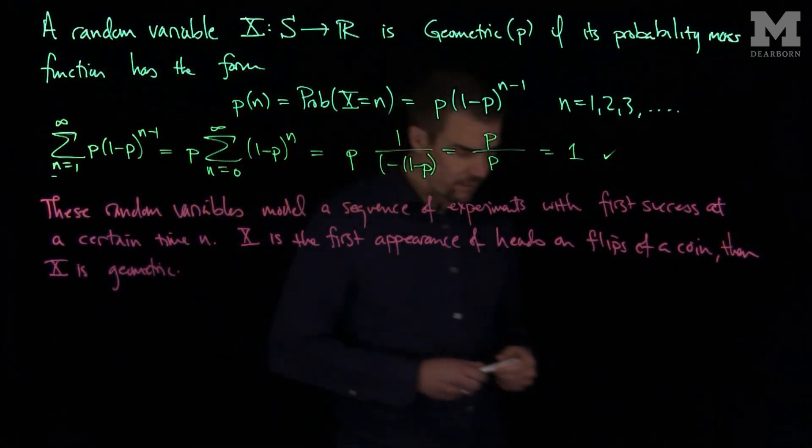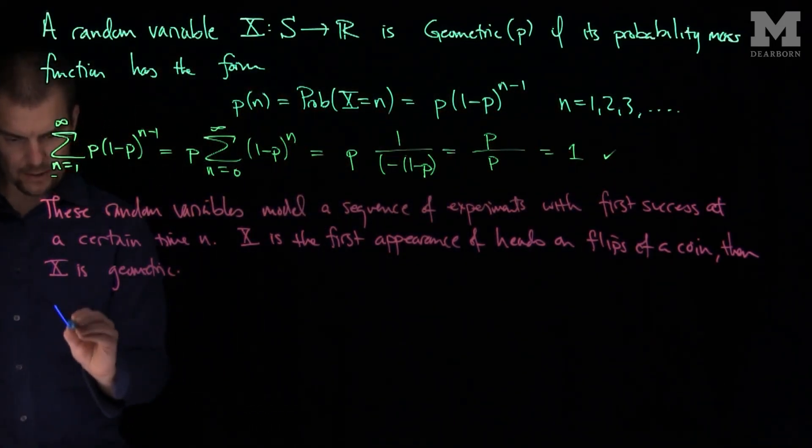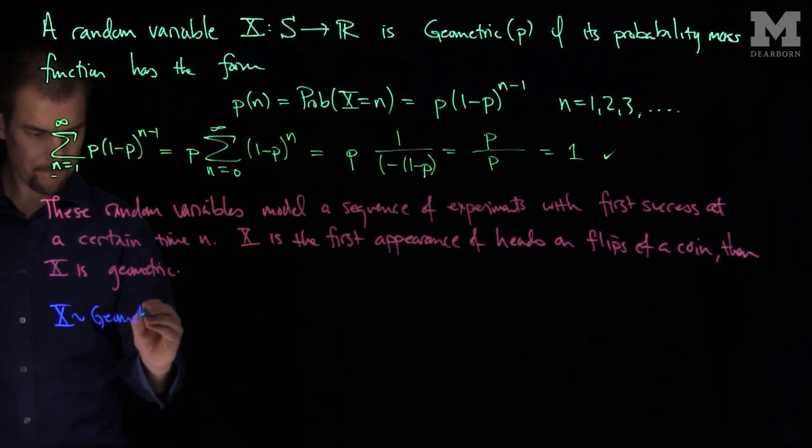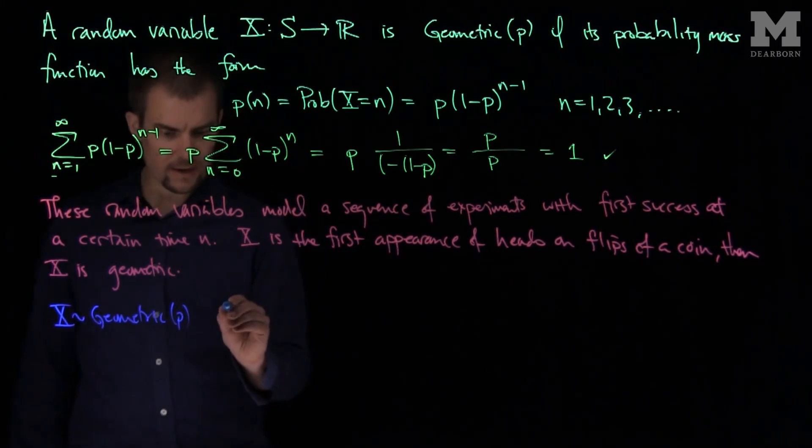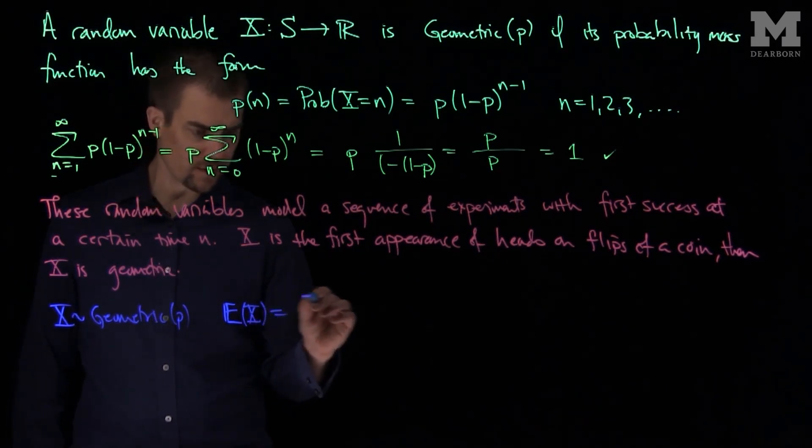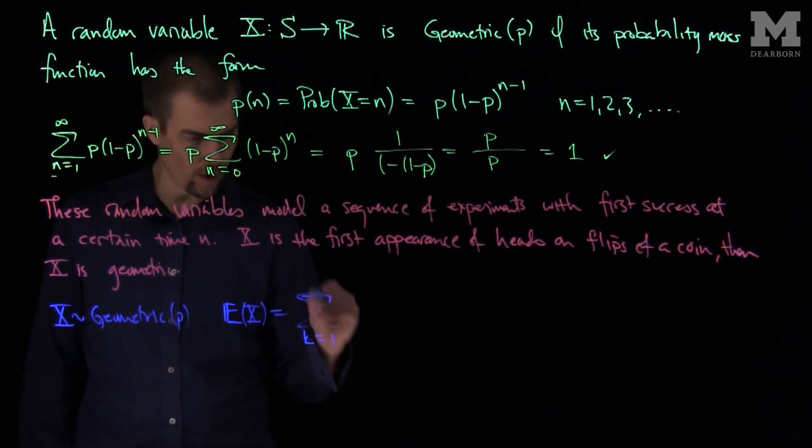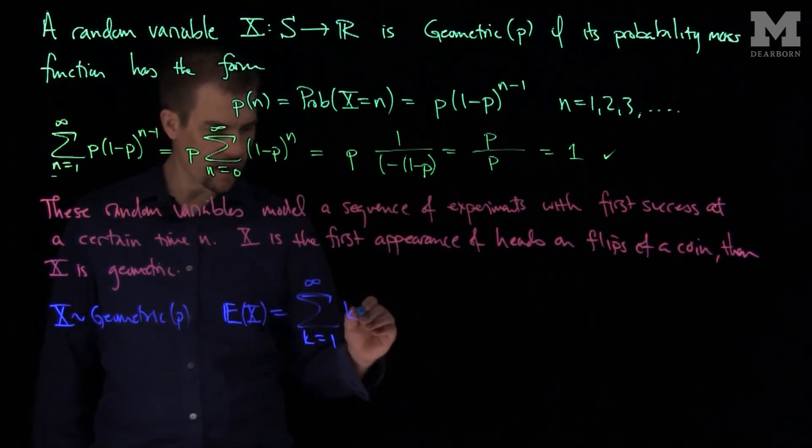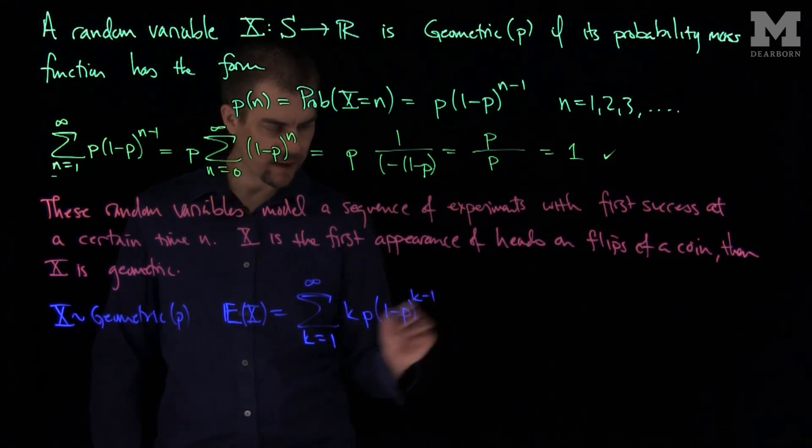And so if we want to compute the mean of this geometric random variable, let's find the expected value. If x is geometric with parameter p, then the expected value of x, or its mean, is going to be the sum: k goes from 1 to infinity of k times p times (1-p) to the k minus 1.